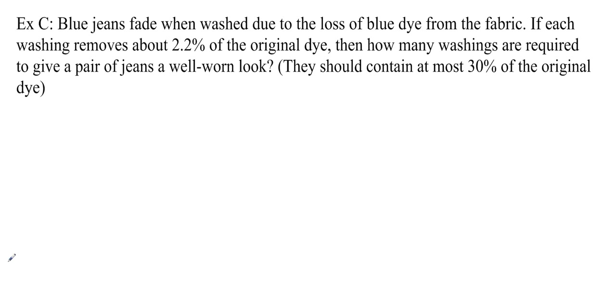We've got two more types of questions. Blue jeans fade when washed due to the loss of blue dye from the fabric. If each washing removes about 2.2% of the original dye, how many washings are required to give a pair of jeans a well-worn look, which means they should contain at most 30% of the original dye. So we're going to solve for 30%. Remember it's removing 2.2, so we're decaying. So basically we're using the formula A equals A naught times 1 minus I to the N. We're subtracting because it is a decay rate.